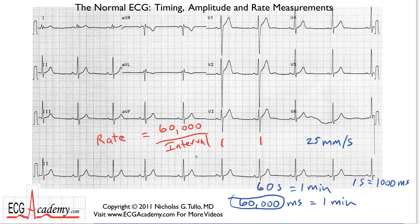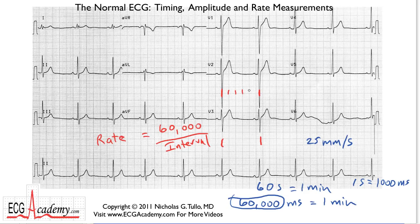So how do you figure that out? You simply count — knowing that each big box equals 200 milliseconds. Make it easy on yourself: scan the ECG and look for a QRS complex that lands on a heavy line. Then measure how many milliseconds it is from one beat to the next. Counting off: 200, 400, 600, 800, 1000 — and looking carefully, this turns out to be 1100. Taking 60,000 divided by 1100 gives you about 55 beats per minute.